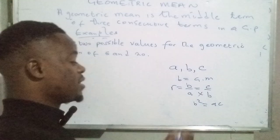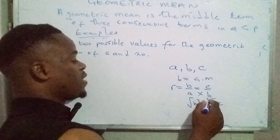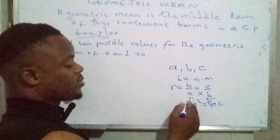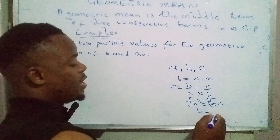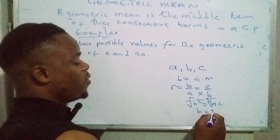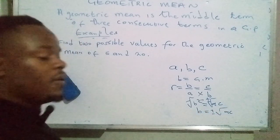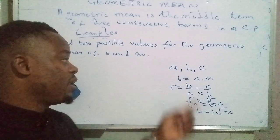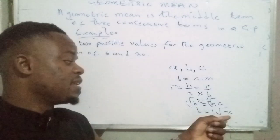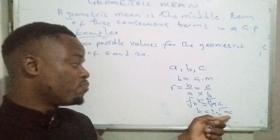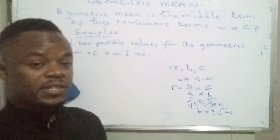which is equal to A times C. To find the geometric mean B, we take the square root of both sides — that and that cancel — so B is equal to the square root of A times C. Therefore, the geometric mean of A and C is found by taking the square root of their product.